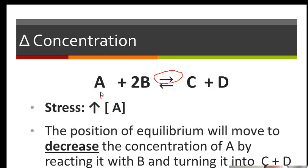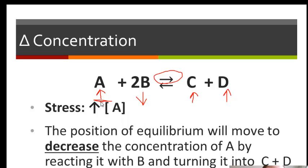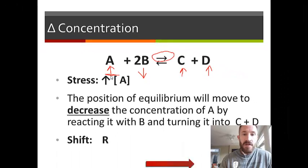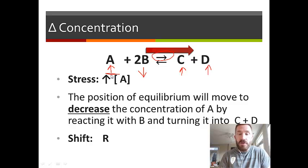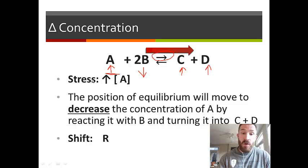When it shifts right, we know the amount of A was already increased. B is going to be used up with all that extra A, so the amount of B will go down. Because we've increased the rate of the forward reaction, we're making more products, so the amount of C is going to increase and the amount of D is going to increase. The three steps are: identify the stress, state the shift, then look at each substance and say if that amount will increase, decrease, or not change.